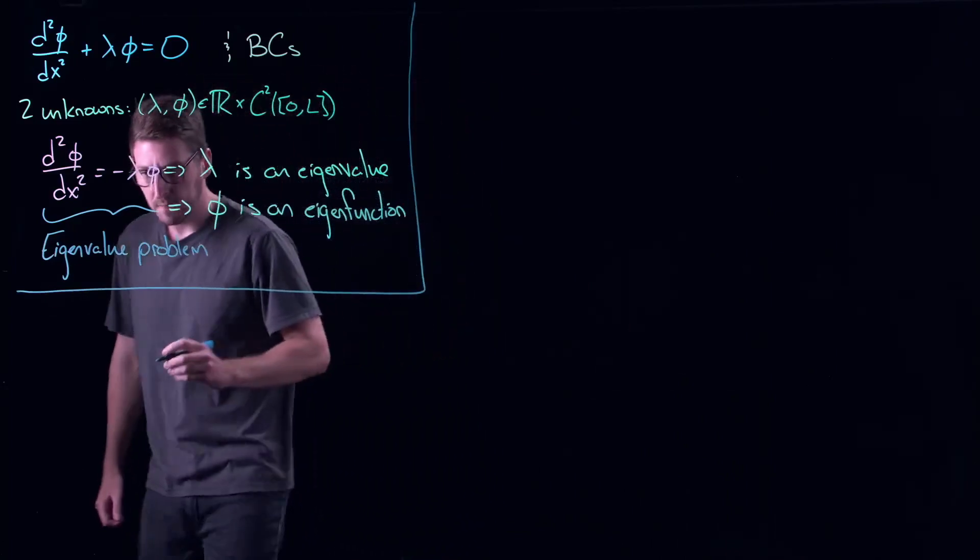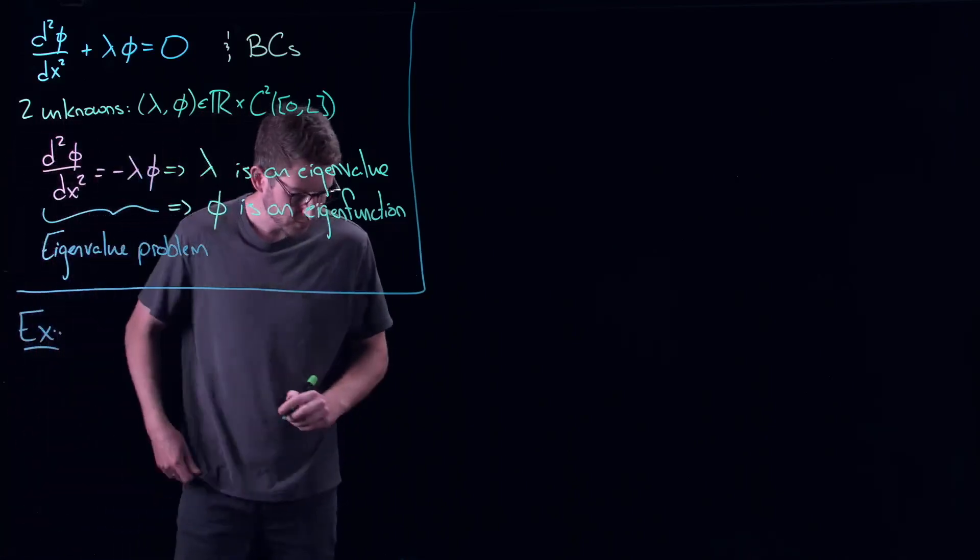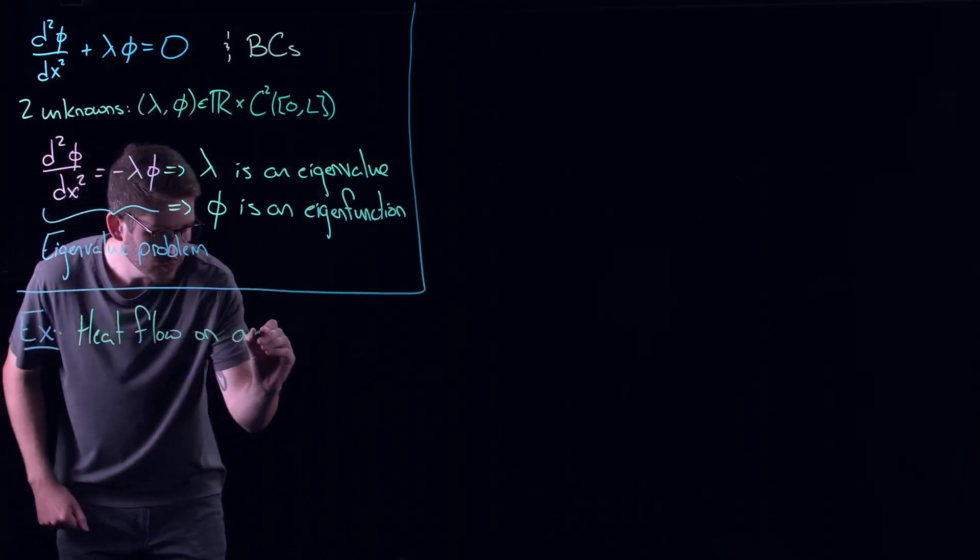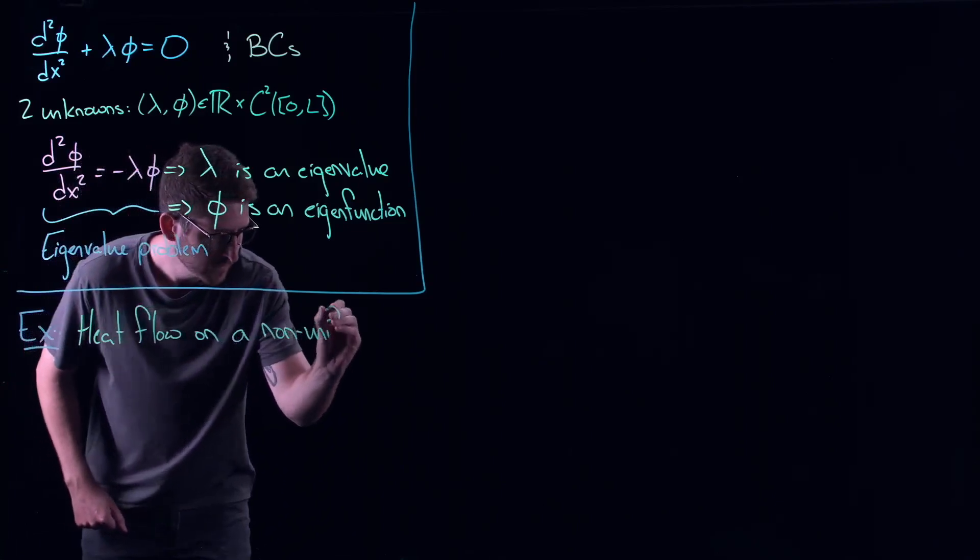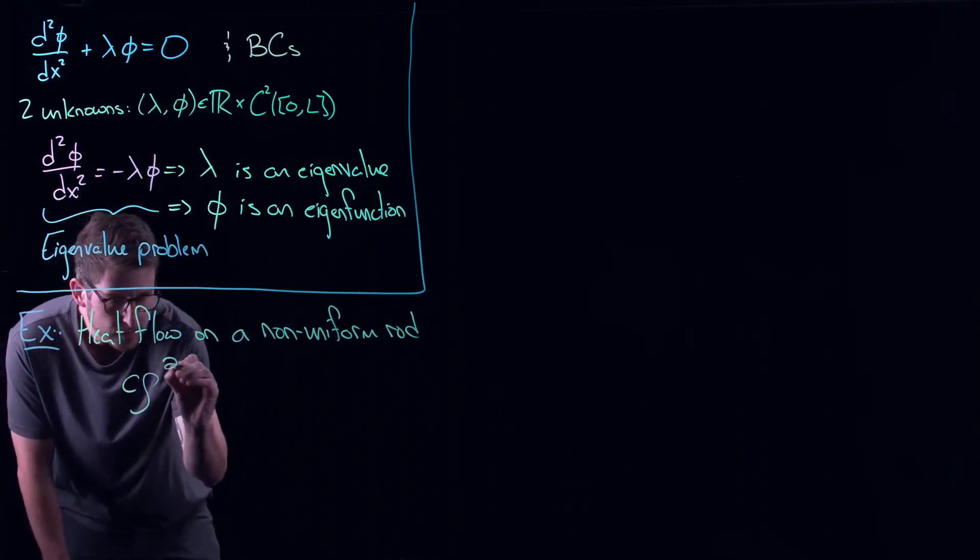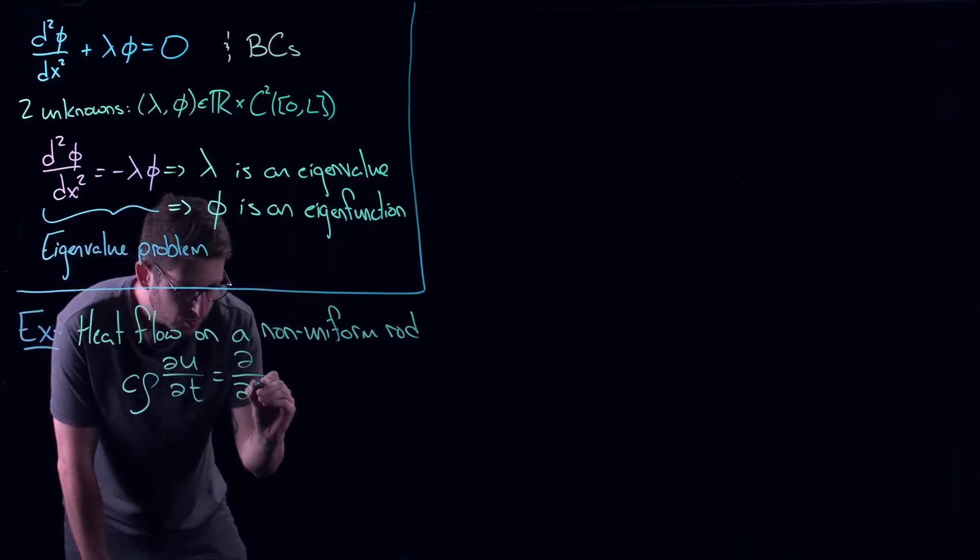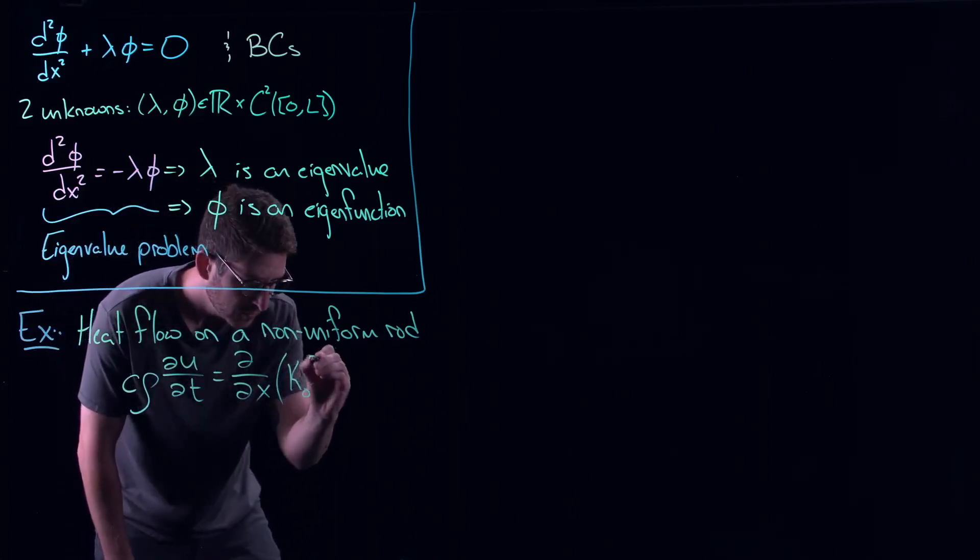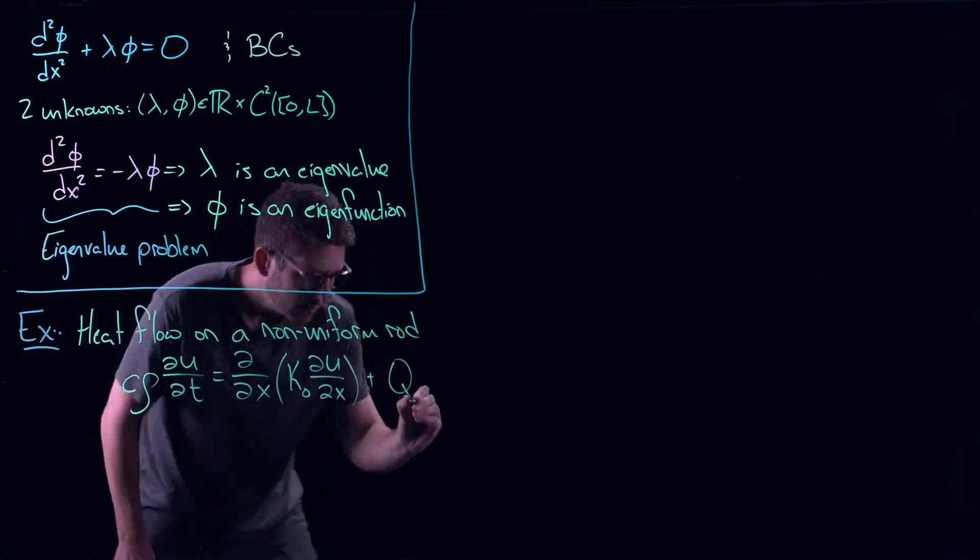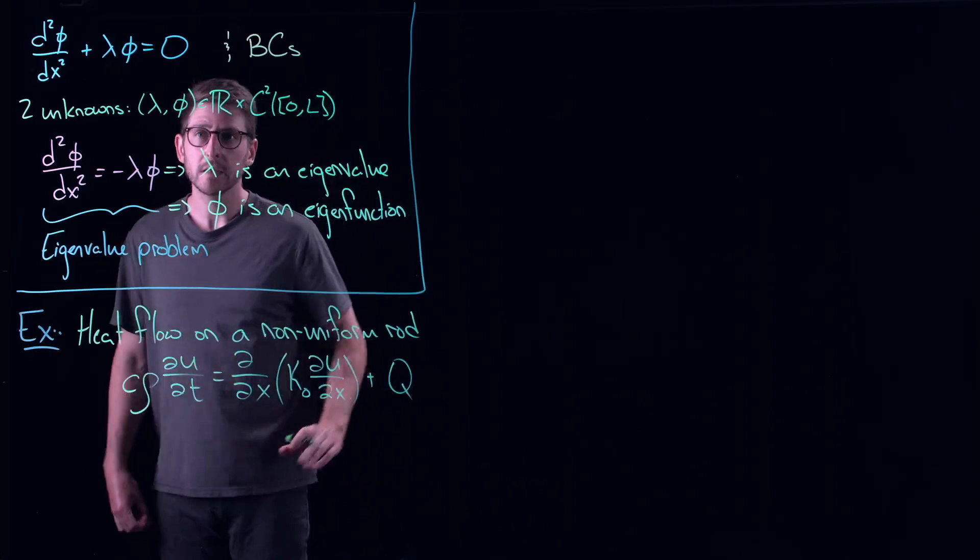Now, let's look at an example of places where eigenvalue problems come up in PDEs, in more general settings. Let's do heat flow on a non-uniform rod. So this is the general heat equation that we saw at the very beginning of this lecture series. We haven't actually solved this equation. C·ρ·∂u/∂t = ∂/∂x(k₀·∂u/∂x) + q. Remember q is some external heat source. But this was our general heat equation.